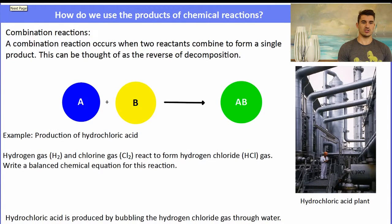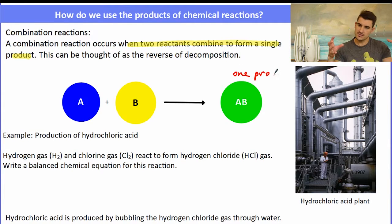A combination reaction: a combination reaction occurs when two reactants combine to form a single product. This is kind of the opposite of decomposition. So we have A plus B, they combine to form AB, a single product. We could have three reactants, but if they combine to form one product, that is a combination reaction.